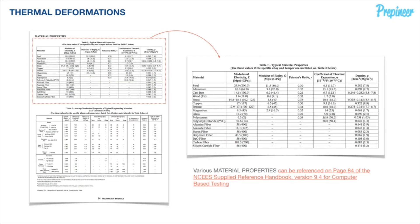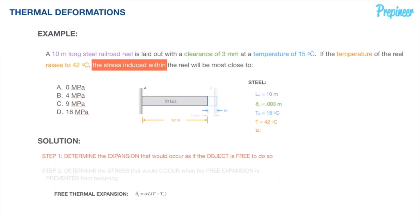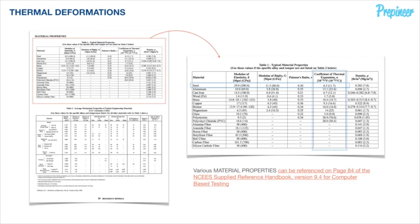We'll hop to page 84 of the NCEES Reference Handbook and look at that top table, specifically the row representing steel. We're given two variables for the coefficient — we'll use the one defined in degrees Celsius. The coefficient of thermal expansion is 11.7 times 10 to the negative sixth per degree Celsius. Be careful not to use the 6.5 value, as that is a common unit error on the FE exam.